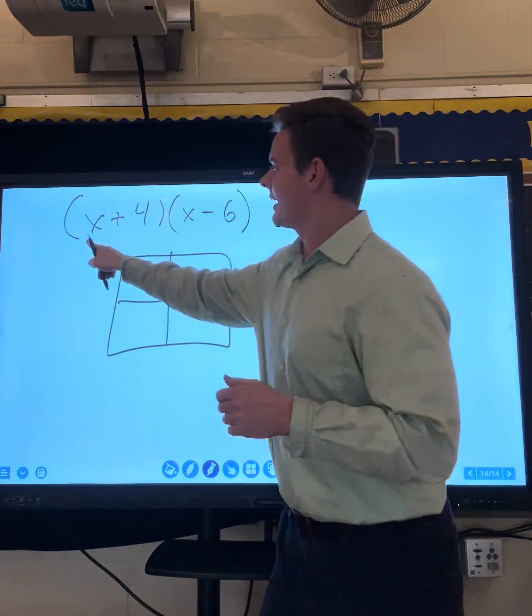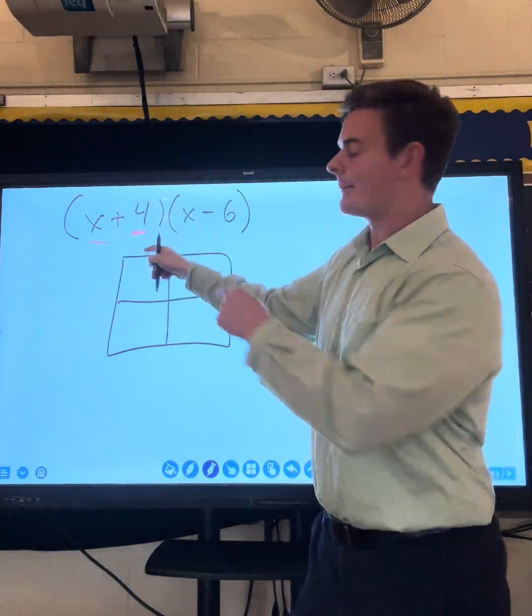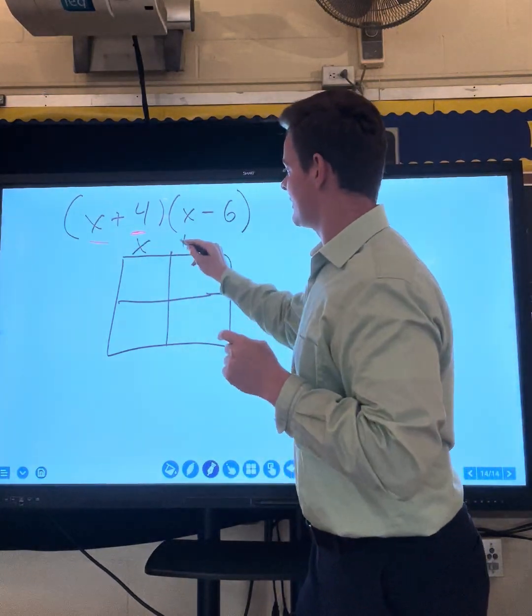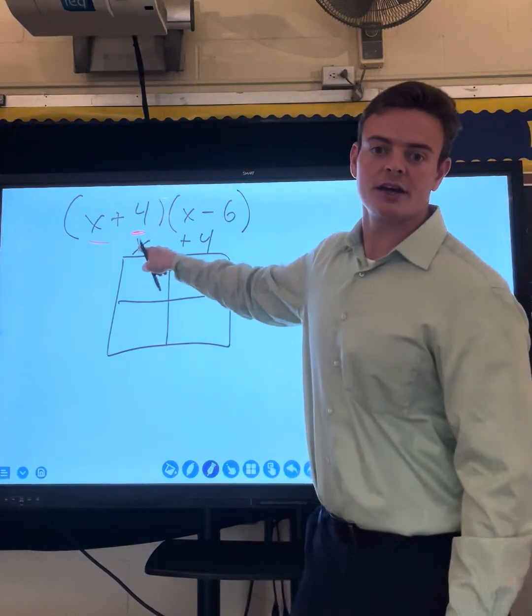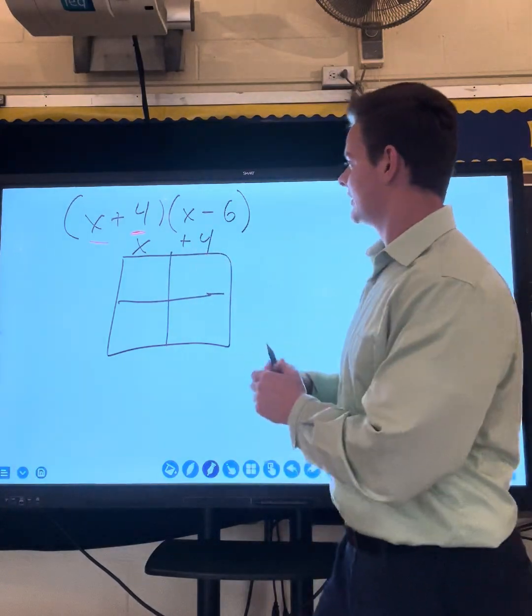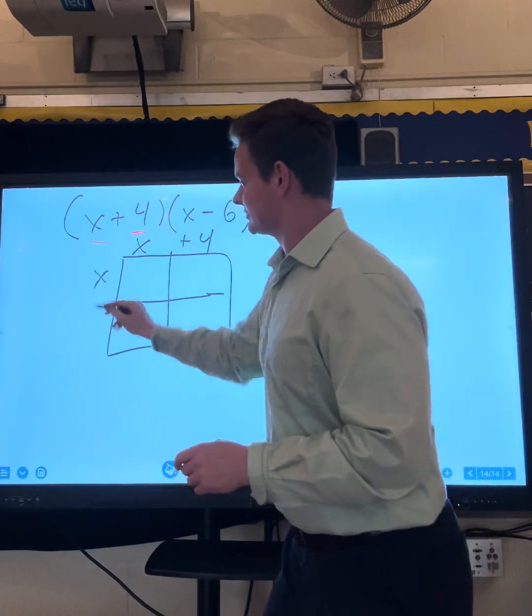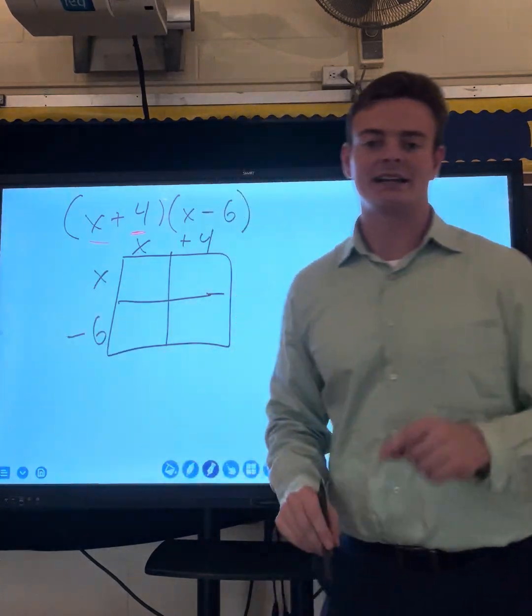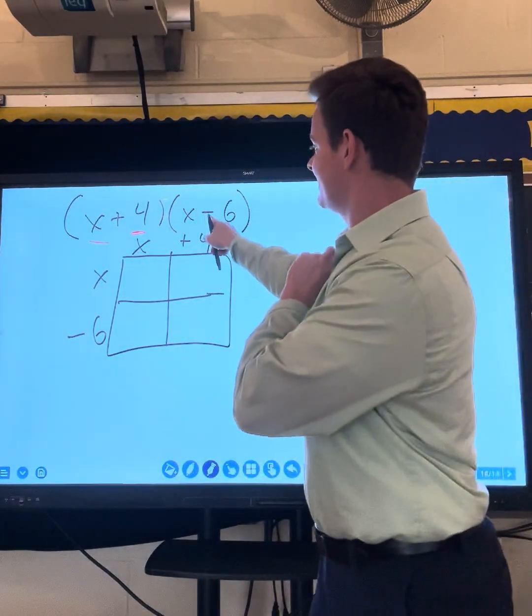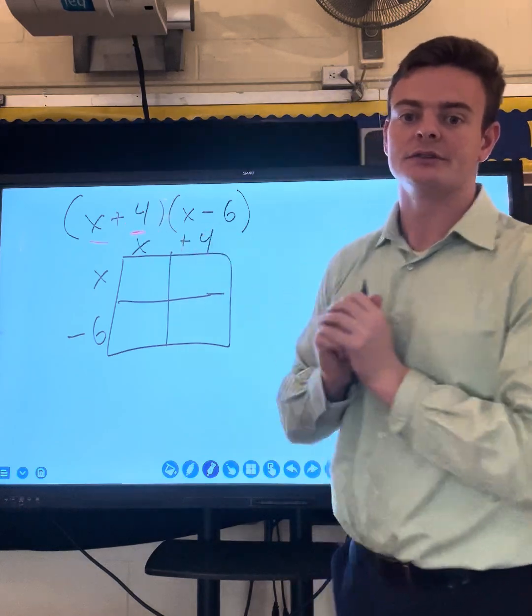Then I'm going to take both of these terms and put them right on top of the box. x goes there, plus 4 goes on top of that one. Then I take my second term: x goes there, and minus 6 goes there. Notice how I'm keeping the sign with the number that it goes to.